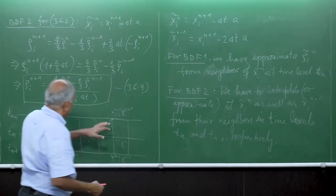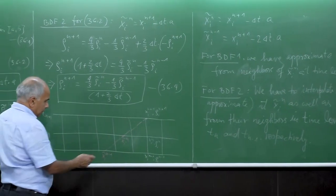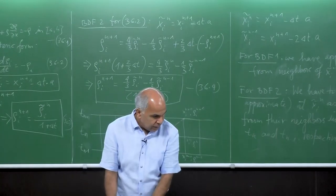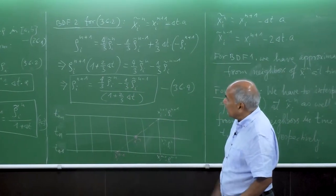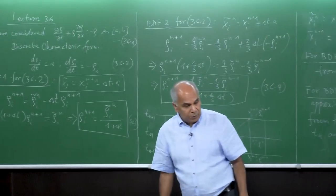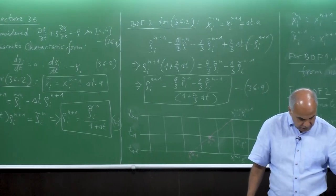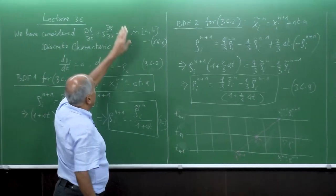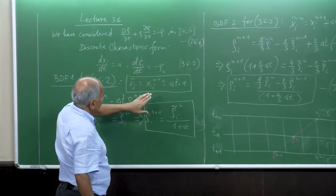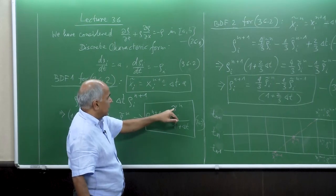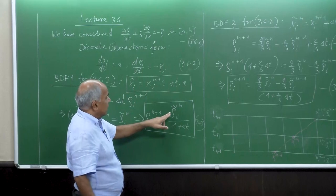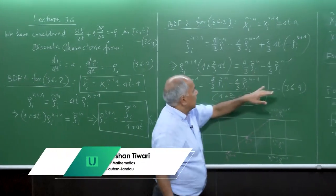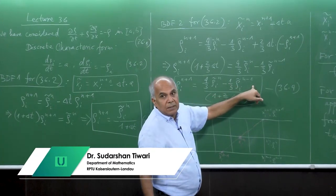Once we obtain the interpolation at x_i tilde n and x_i tilde n minus 1, we plug these values in and get the updated rho_i^n. Now we want to implement this idea into the computer simulation. If there is no source term (minus rho), then rho_i^{n+1} equals rho_i tilde of n — just the initial value, it is a constant. In that case for BDF2 also there is nothing in the denominator: rho_i^{n+1} equals 4/3 rho_i tilde n minus 1/3 rho_i tilde n minus 1.